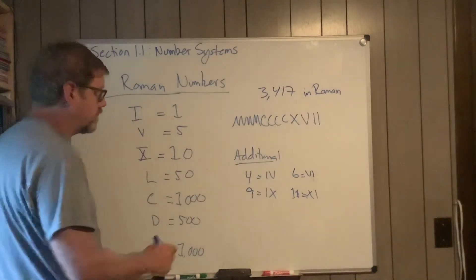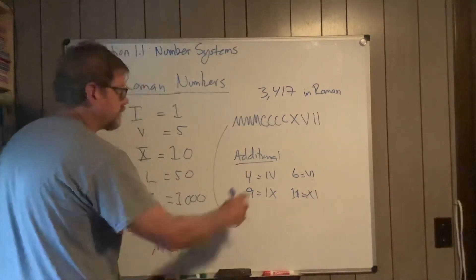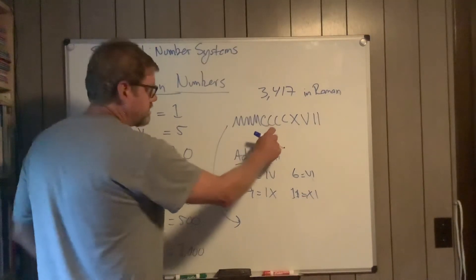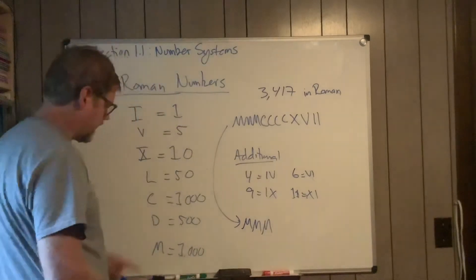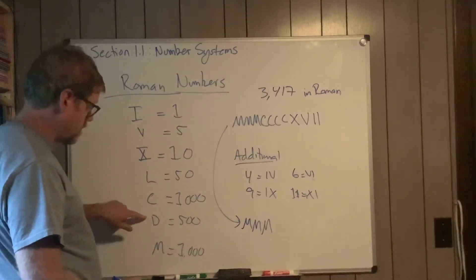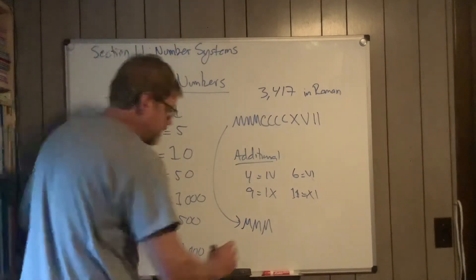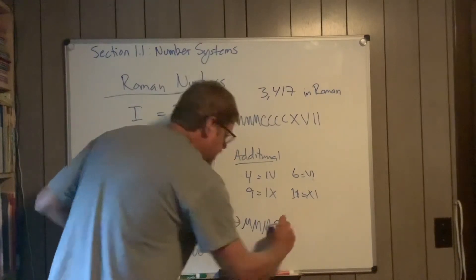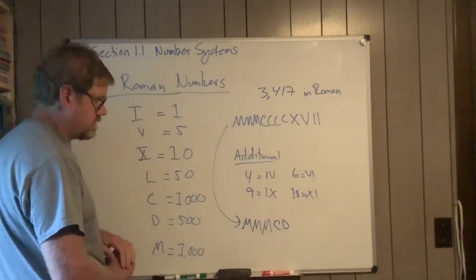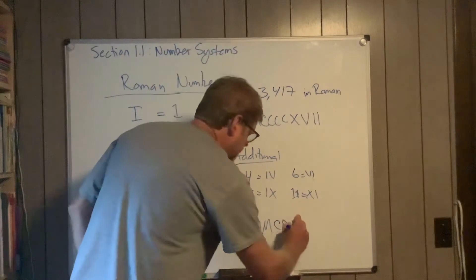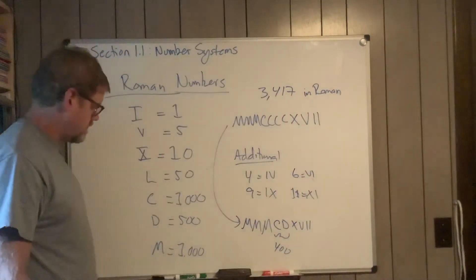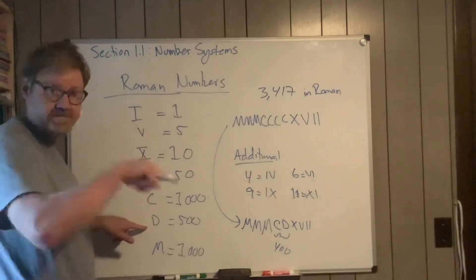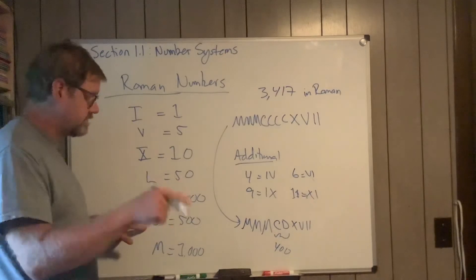Actually, instead of doing CCCC to give me 400, I can actually do what's one right before D: CD. And then XDII... So that's 400 right there, one before D. So DC would be 600, CD is 400.